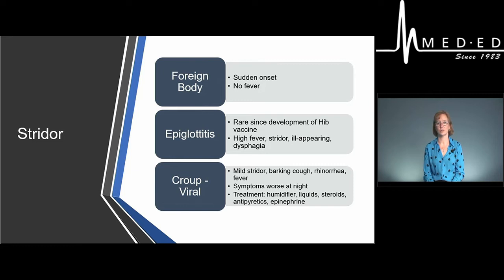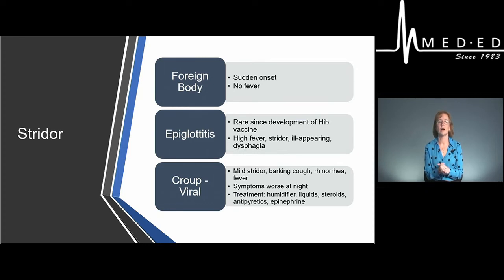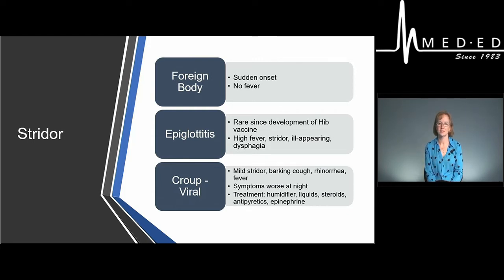If the child has stridor at rest and looks uncomfortable, the next treatment is nebulized epinephrine. Epinephrine vasoconstricts, opening the airway and relieving upper airway obstruction. When parents go home, emphasize cool liquids. If the barking cough becomes much worse, encourage home interventions such as taking the child outside in cool air, opening the freezer door to breathe cool misty air, or a warm steamy shower.